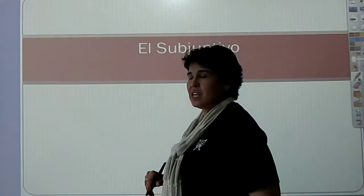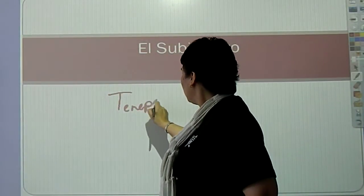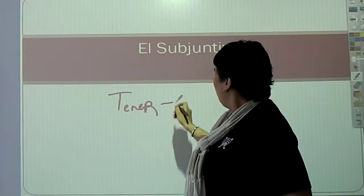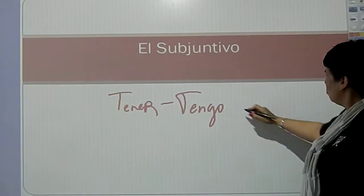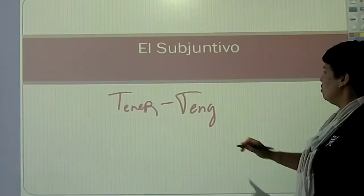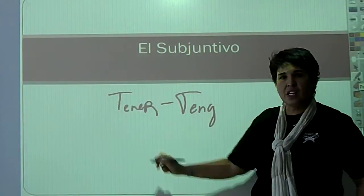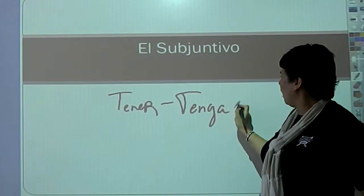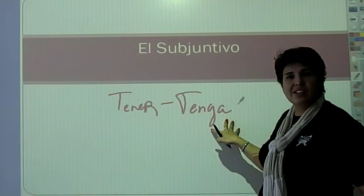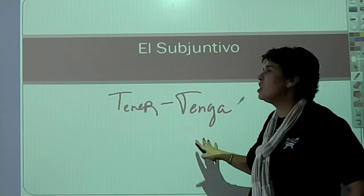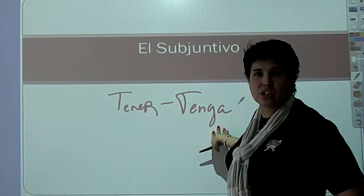So, for example, for the verb tener, you go to the yo form, which is tengo, you drop the o, and you switch the vowel. The verb is ER, so you go to A. Tenga, tengas, tenga, tengamos, tengan. We've talked about this. We've done the subjunctive conjugation before.